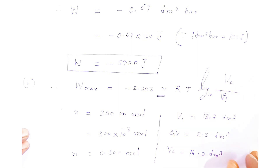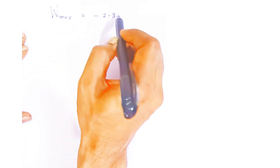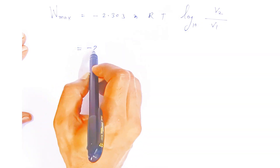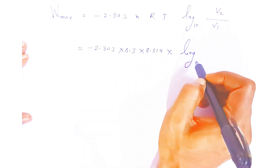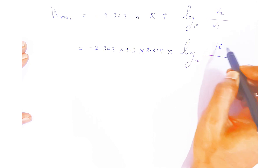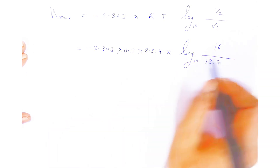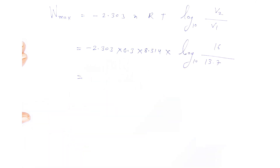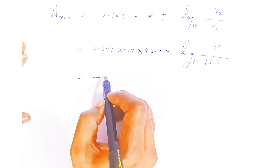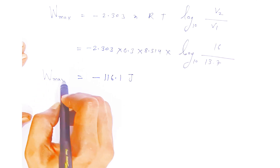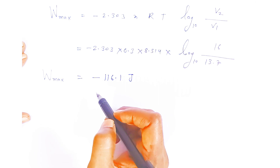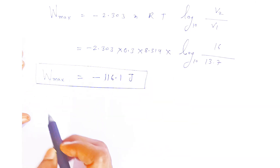Now we know V1 = 13.7 dm³ and V2 = 16 dm³. Putting the values into the formula: w_max = -2.303 × 0.3 × 8.314 × 300 × log₁₀(16/13.7). Taking the log and multiplying, the result is -116.1 joules. This is the maximum work done — the maximum energy lost by the gas when it expands isothermally and reversibly.